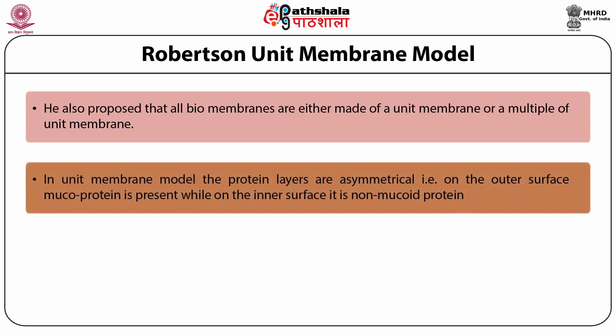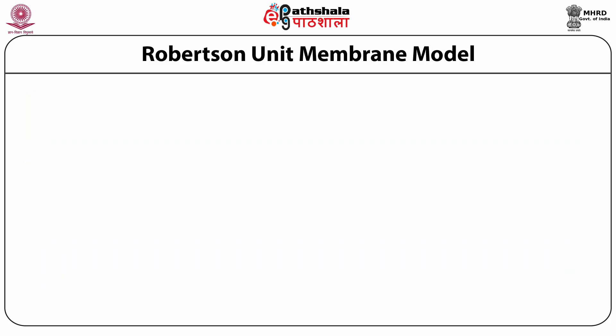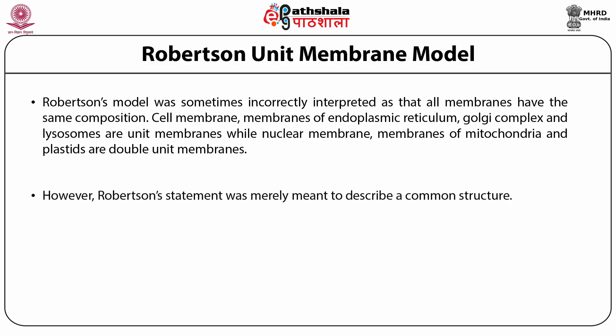In the unit membrane model, the protein layers are asymmetrical — on the outer surface mucoproteins are present, while on the inner surface non-mucoproteins are present. Robertson's model was basically the confirmation of the earlier two models: Gorter and Grendel's 1925 model and the Danielli-Davson sandwich model of 1935. Robertson's model was sometimes incorrectly interpreted as meaning that all membranes have the same composition. Cell membrane, membranes of endoplasmic reticulum, Golgi complex and lysosomes are unit membranes, while nuclear membrane and membranes of mitochondria and plastids are double unit membranes. However, Robertson's statement was merely meant to describe a common structure.